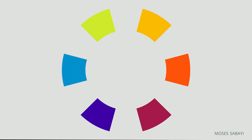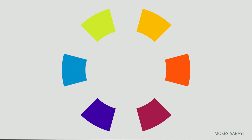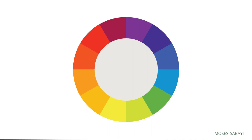You can also create tertiary colors by mixing a secondary color with one of its primary colors. For example, if you add yellow to green it will create yellow-green. It's very simple, but it requires you to practice it on the color wheel yourself. Also make sure you use the correct primary colors to get the right shade, the right secondary and tertiary colors.